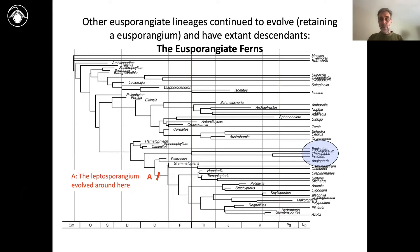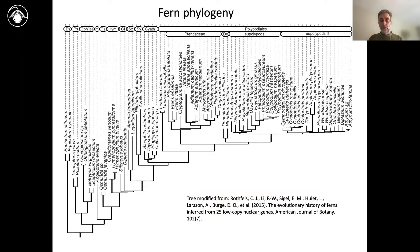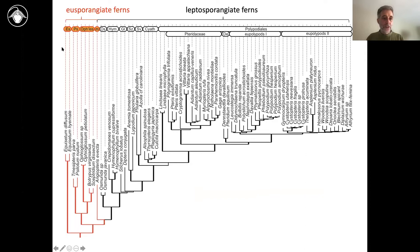So these lineages we call the eusporangiate ferns, and they're what I'll talk about briefly in this session. Switching to orientation: this is a phylogeny just of ferns, and we're going to focus on the eusporangiates, which are the lineages colored in red, and give a very quick tour through each of these groups.